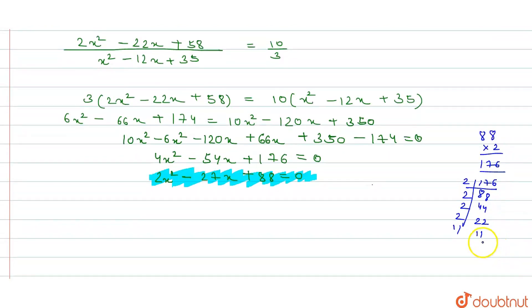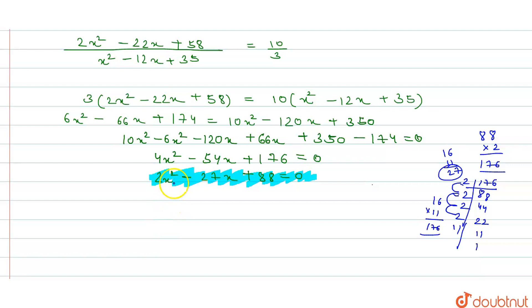Double check: 2 times 4 is 4, 4 times 4 is 8, 8 times 2 is 16. 16 into 11 equals 176, and 16 plus 11 equals 27 — both conditions are satisfied. So we factorize: 2x squared minus 16x minus 11x plus 88 equals 0.